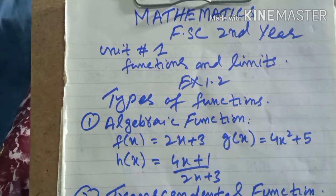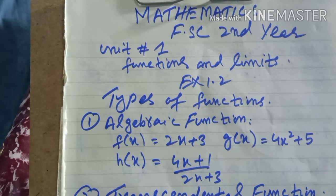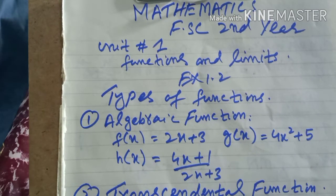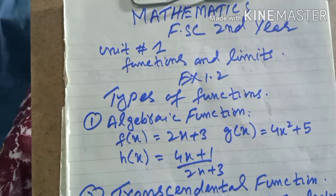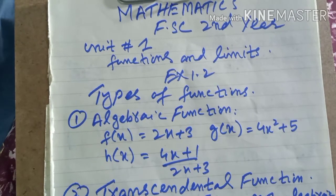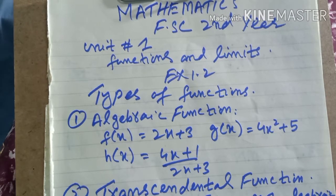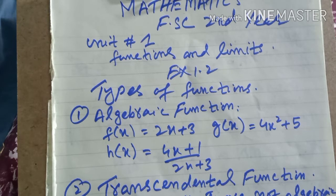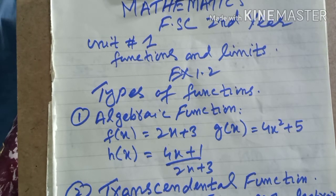Similarly, algebraic functions also exist, which can include polynomials and rational expressions. For example, f(x) = 2x + 3 is an algebraic expression. Similarly, g(x) = 4x² + 5 is another algebraic expression and is also a polynomial. h(x) = (4x + 1)/(2x + 3) is not a polynomial but is still an algebraic expression, so we can call it an algebraic function.